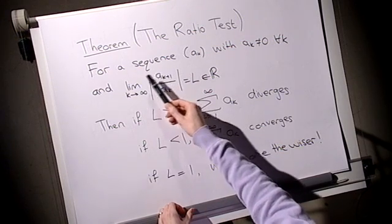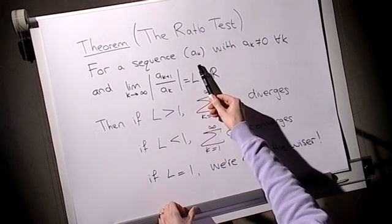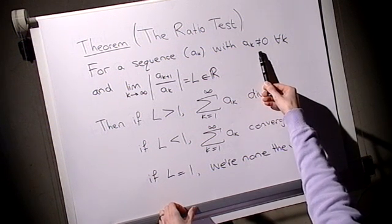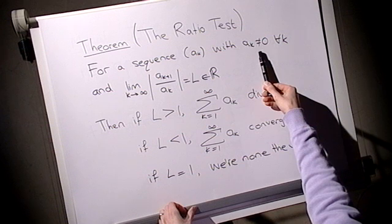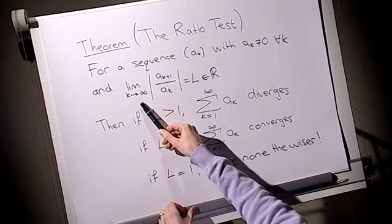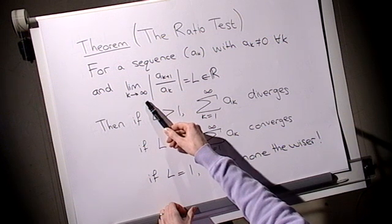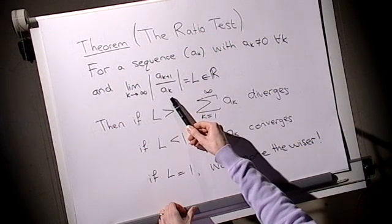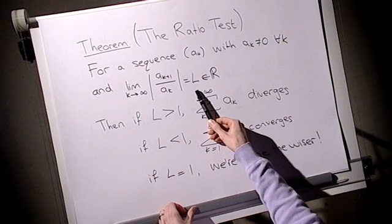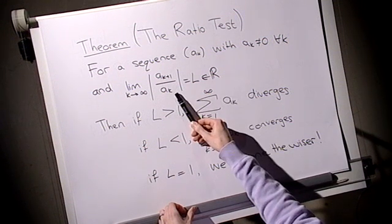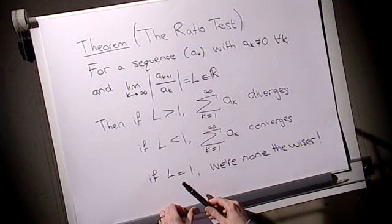Let's turn to the ratio test. So the ratio test says the following. For a sequence a_k, none of the terms are zero. It isn't too much of a trouble. We can always reject the zero terms. They won't damage our sum. And we have the following condition. If the limit, as k goes to infinity, of the ratio of one term to the next term tends to l, which is a real number, in particular this limit exists, then the conclusions of the theorem are as follows.